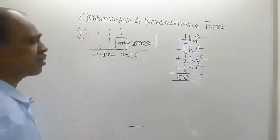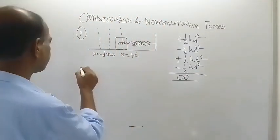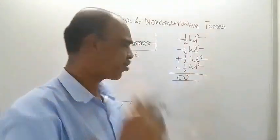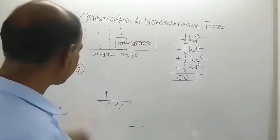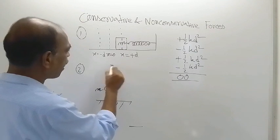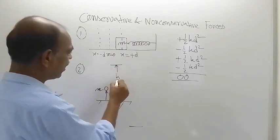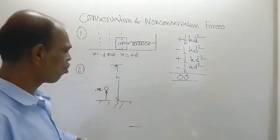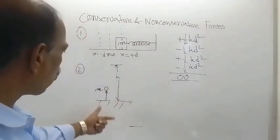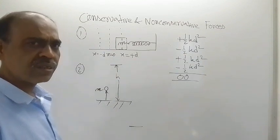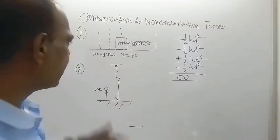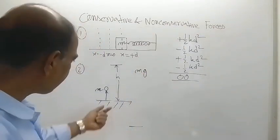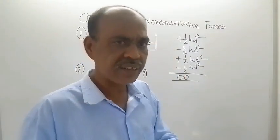That was case number 1. Now for case number 2: suppose you throw an object of mass m vertically upward from the ground. It reaches a height h, where its velocity becomes zero, and then falls back down. For heights near the earth's surface, h is very small compared to the radius of the earth, so g is taken as constant and the weight mg remains constant throughout.